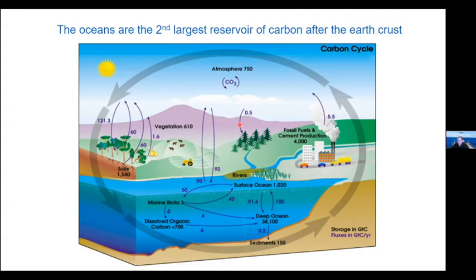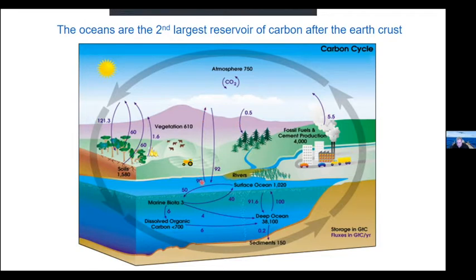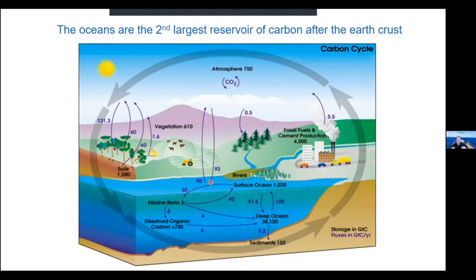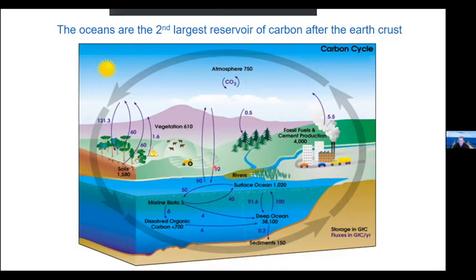Oceans are the second largest reservoir of carbon after the Earth's crust. I want to focus on two arrows: 90 gigatons of carbon go out of the ocean in general, and 92 go in, averaged over the whole globe. The difference is what's important — how much is taken up by the ocean. A very small change in our understanding of the processes at the surface could have a big impact on this flux or uptake by the ocean.